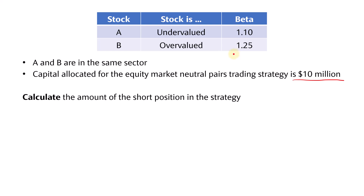The capital allocated will be used to buy the stock. In this case, we will long stock A and then we will short stock B. We need to calculate the amount of the short position in the strategy. We know that we want to long stock A and allocate the capital of $10 million to buy stock A. But then how much should we short in stock B?